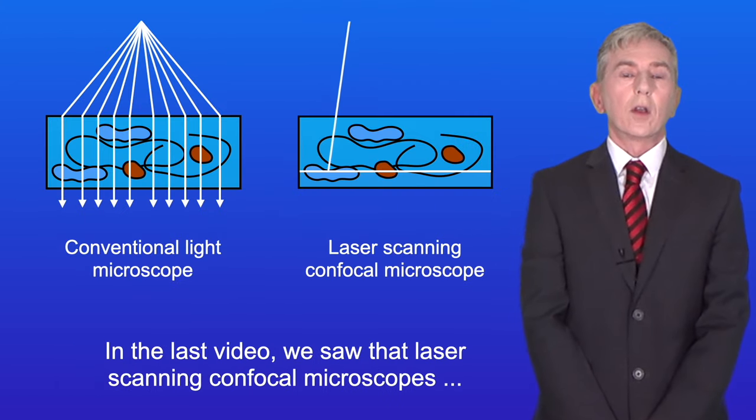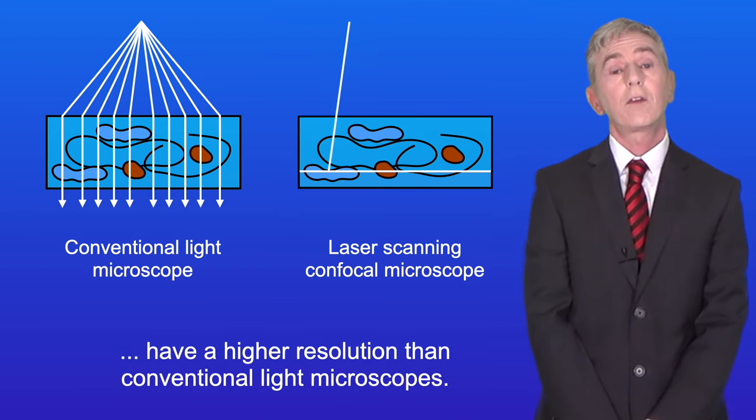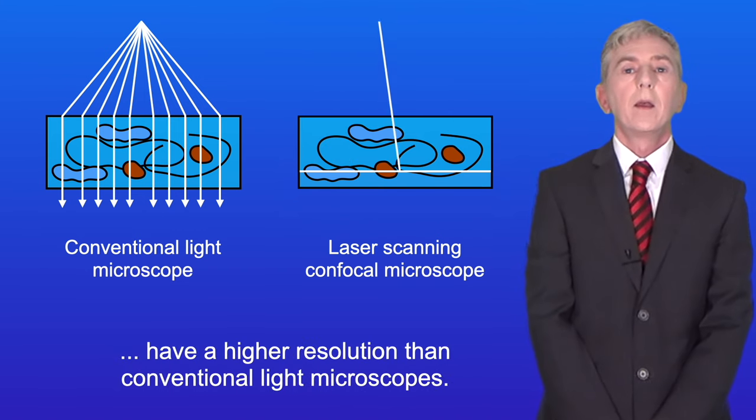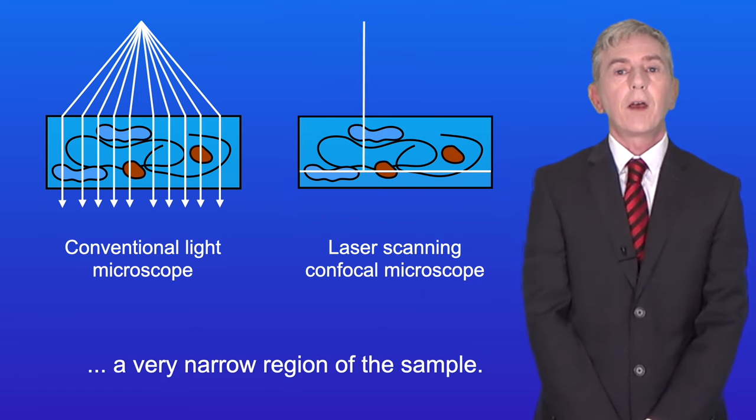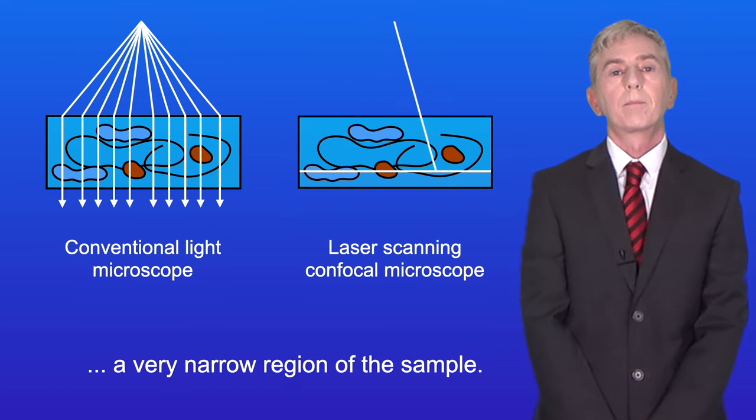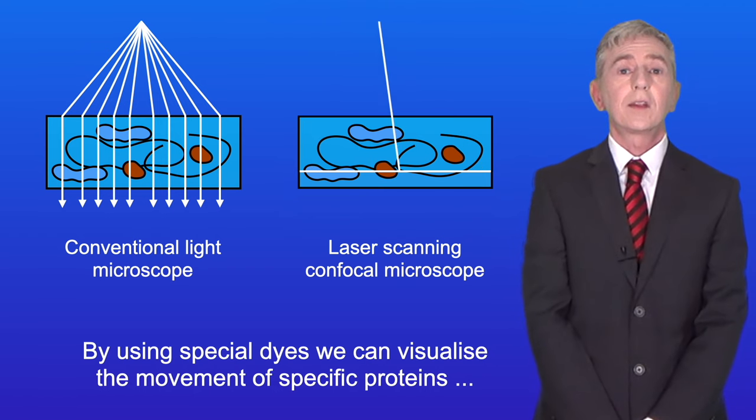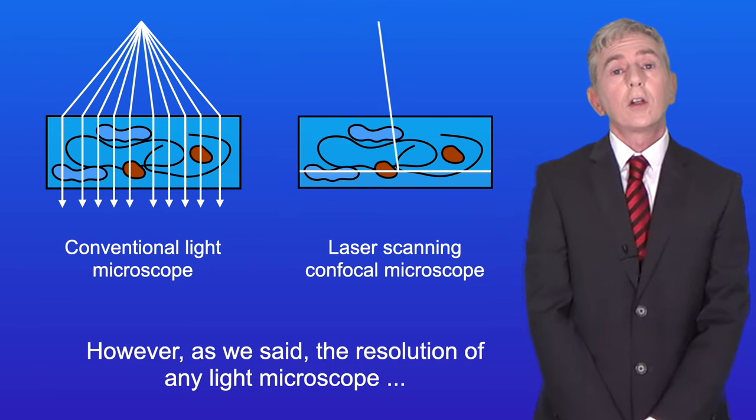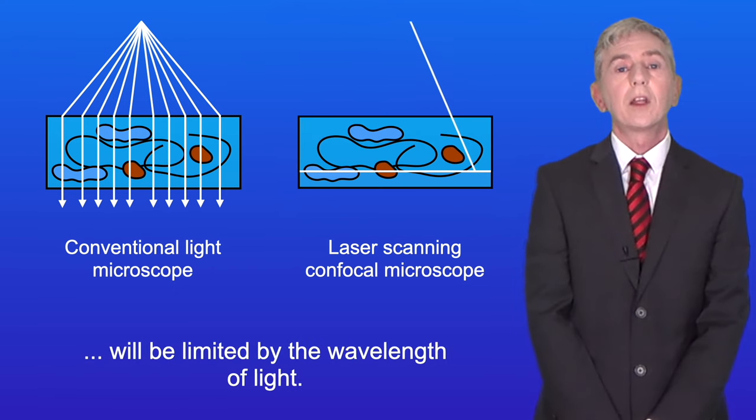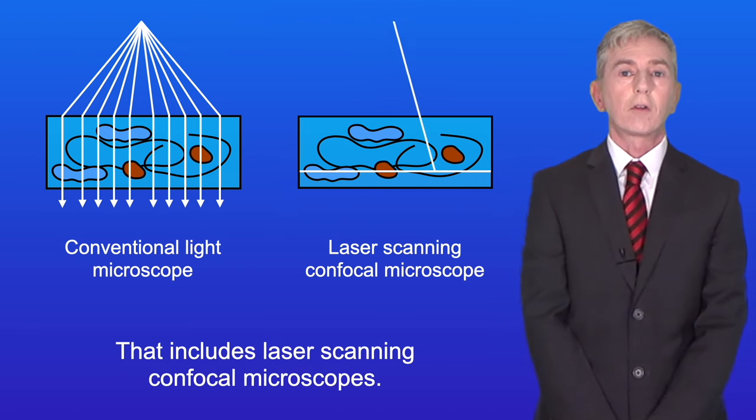In the last video, we saw that laser scanning confocal microscopes have a higher resolution than conventional light microscopes. These work by using a laser to visualize only a very narrow region of the sample. By using special dyes, we can visualize the movement of specific proteins or parts of the cell. However, the resolution of any light microscope will be limited by the wavelength of light, including laser scanning confocal microscopes.